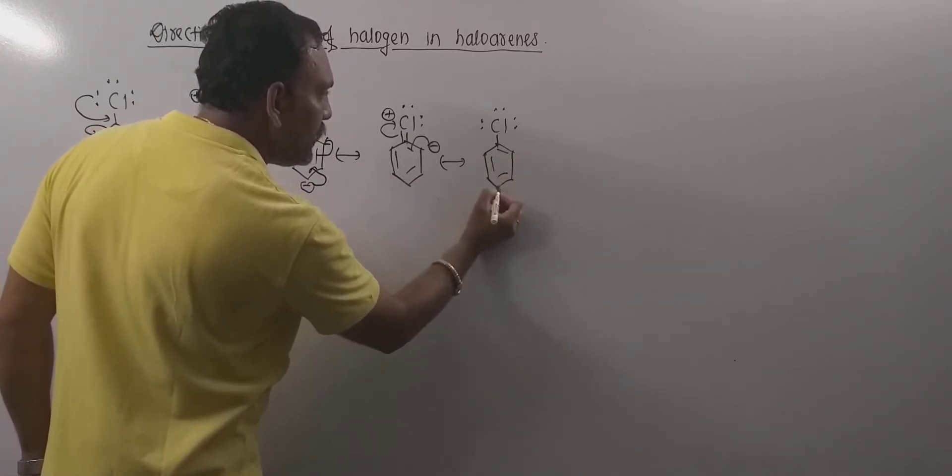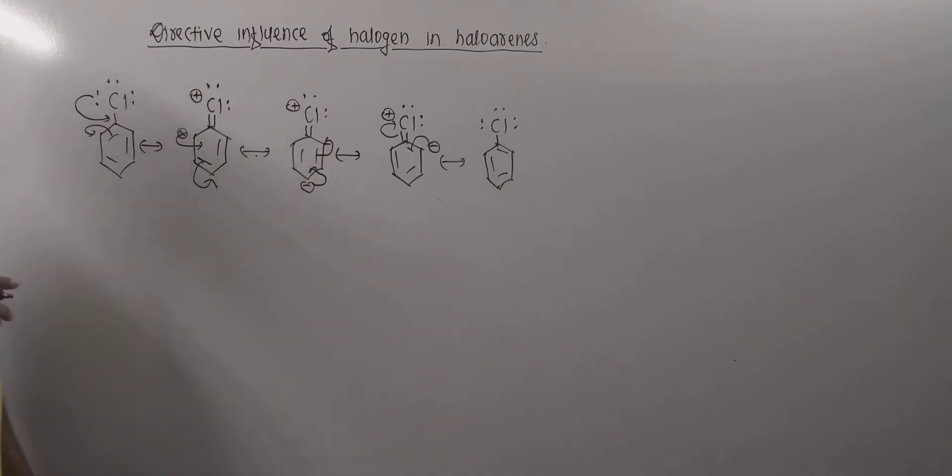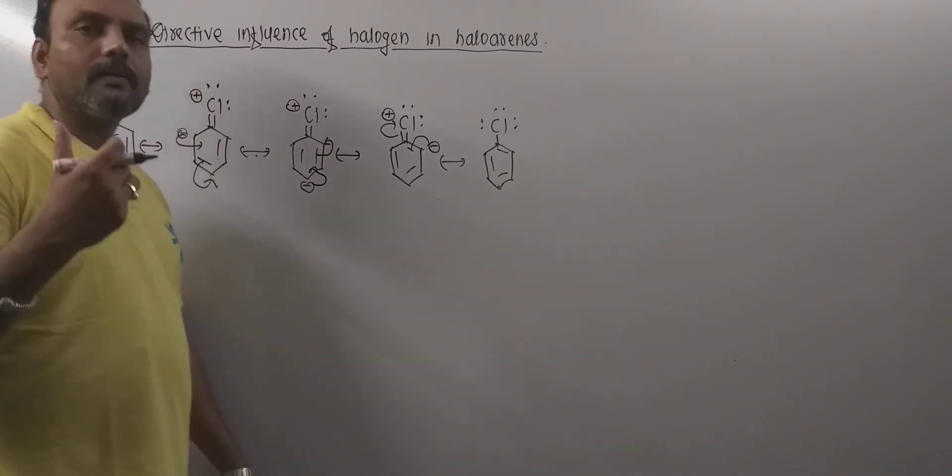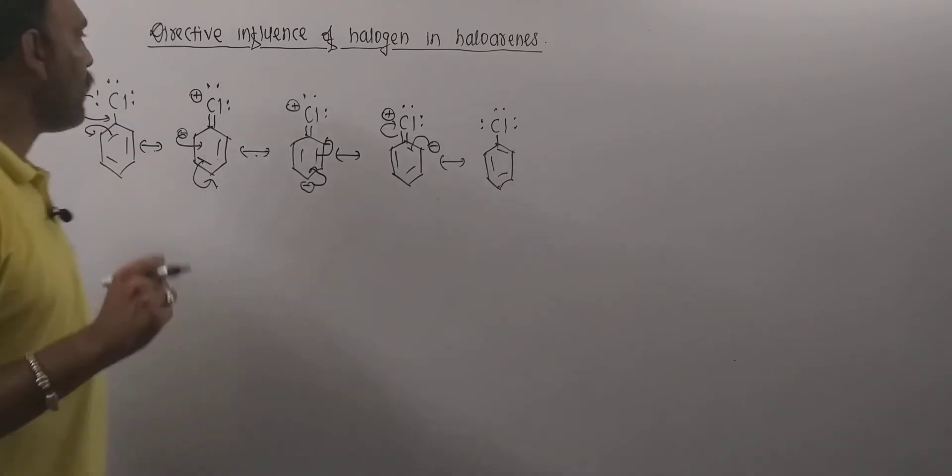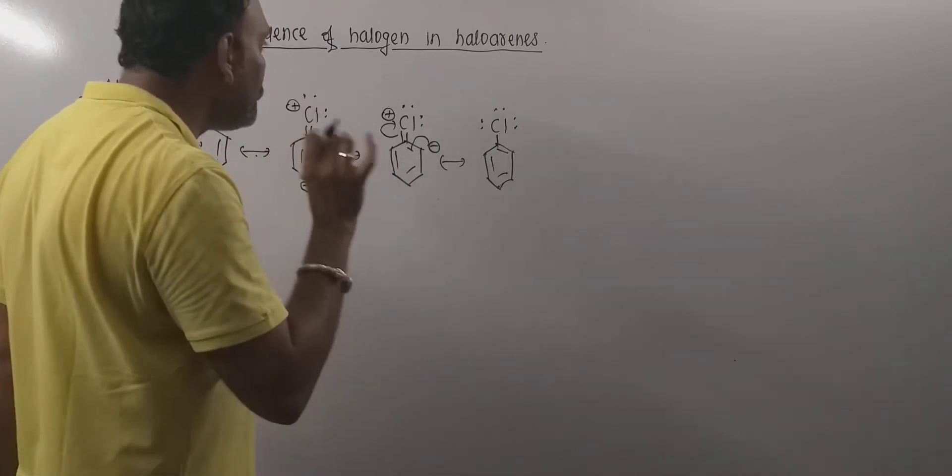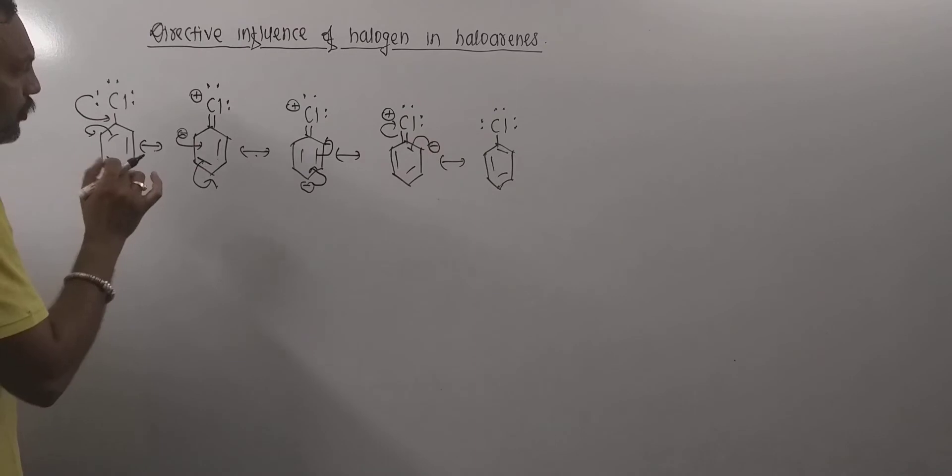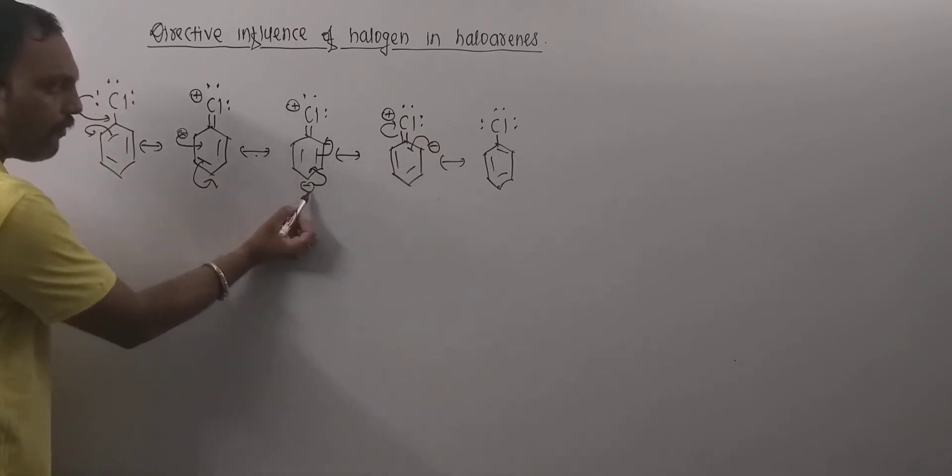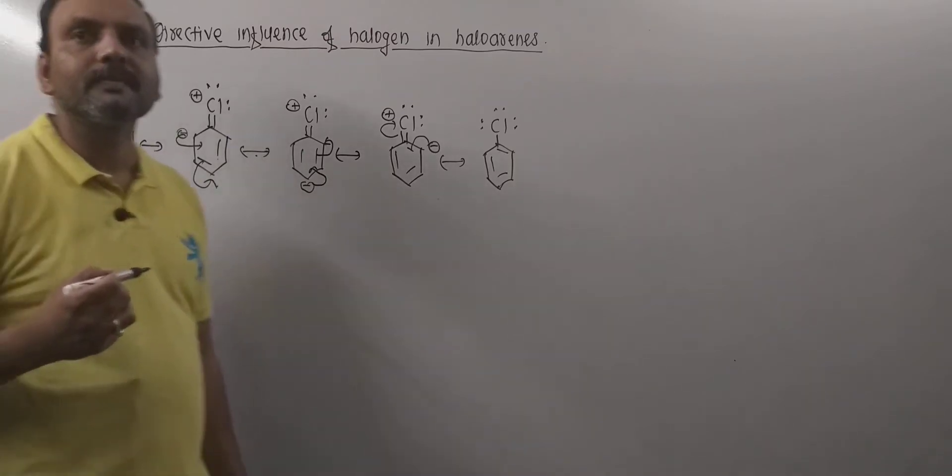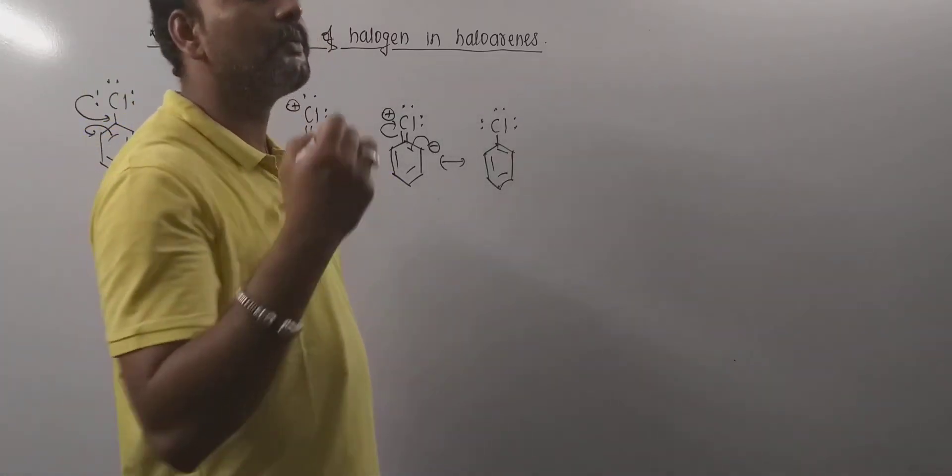So these are the resonating structures in chlorobenzene which is one of the finest examples of haloarene. Now what is the point? Point to be noted is look at these structures. Position number 2, position number 4, position number 6. These positions are negatively charged.